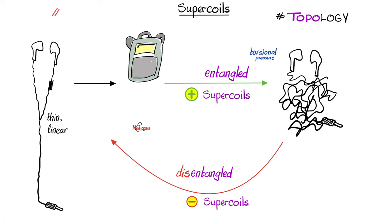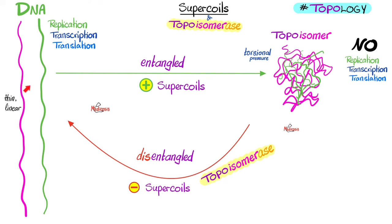In Greek, 'topo' means space. Because your DNA is thin, long, and double-stranded, by the laws of nature it should entangle — forming positive supercoils. If your DNA is entangled, you cannot replicate it, transcribe it, or translate it into proteins. No proteins means no cell division, no cell functions — you are toast. Your relaxed DNA gets converted to the evil topoisomer: same nucleotides and genetic code, but a different spatial orientation rendering it useless.